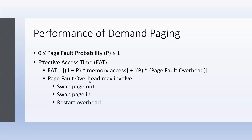What does page fault overhead mean? It may involve swapping a page out. So when a page fault occurs, one page is swapped out and another page is swapped in. Swap page out and swap page in operations are performed, along with restart overhead, until all the pages are loaded.